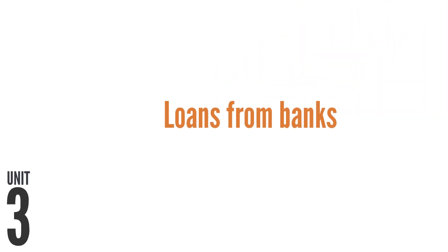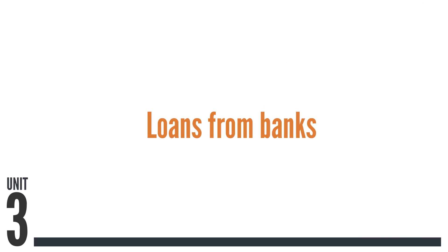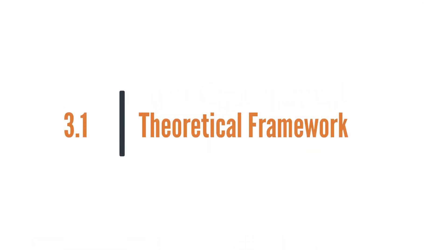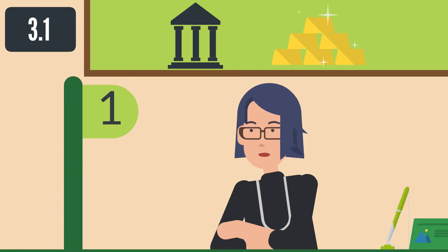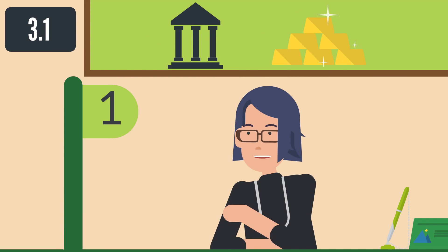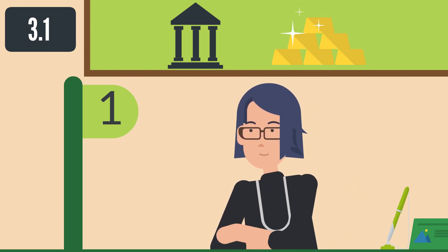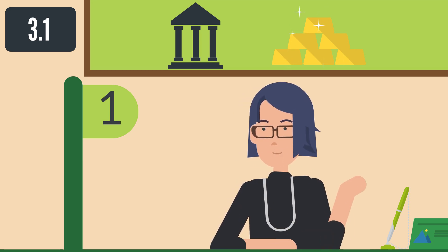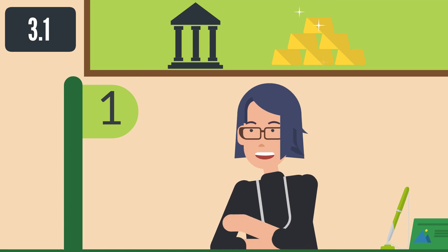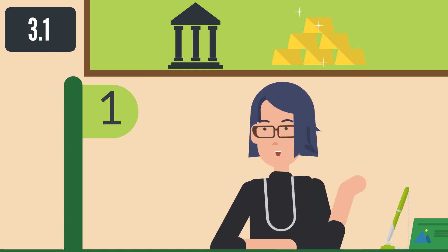Unit 3: Loans from Banks. This unit presents typical or the most common procedures for a SME to issue a loan from the bank. After reading this unit, you will be able to acquire knowledge on the most common procedure for issuing a loan from the bank, understand the procedure in the context of bank formalities, and understand the procedures for loan issuing in Cyprus.